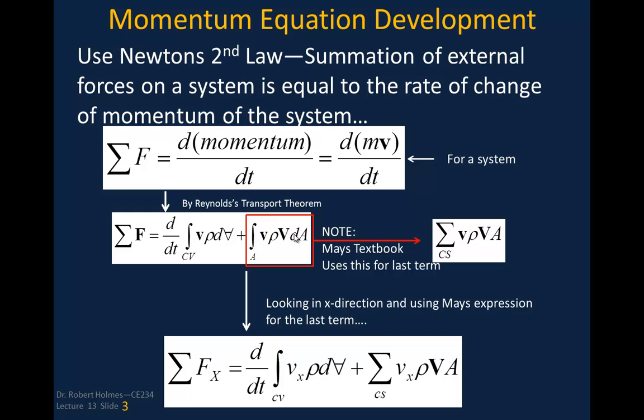If we're looking simply in the x direction, we get this formulation, which says that the sum of the forces in the x direction are equal to the change with respect to time of the integral of the momentum flux in the control volume, so that would be what is coming in and what is going out in terms of the change that's occurring inside the control volume, and then the sum of that momentum going across the face.